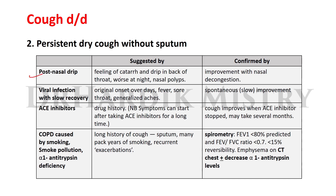Post-nasal drip is suggested by a feeling of catarrh and drip in the back of the throat, worsening at night, and the presence of nasal polyps. It is confirmed by improvement with nasal decongestant drugs. Viral infection with slow recovery is suggested by original onset over days, associated with fever, sore throat, and generalized aches. It is confirmed by spontaneous or slow improvement depending upon immunity.